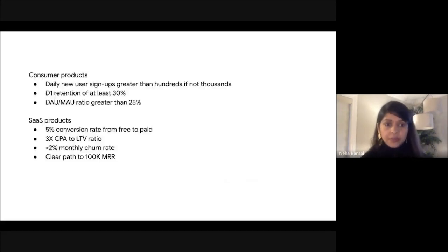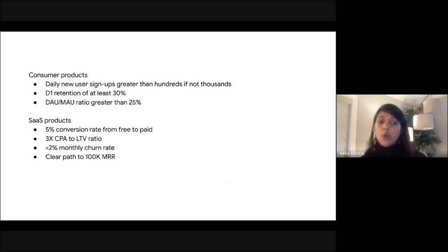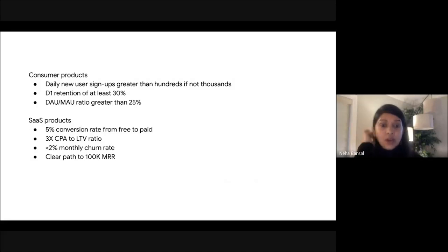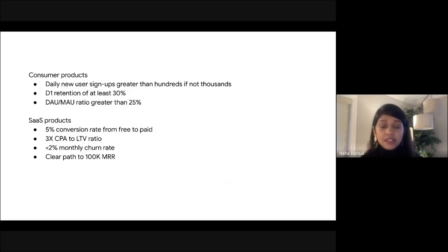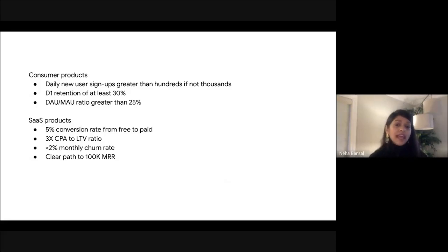For consumer products, you'd want to see a daily active user to monthly active user ratio of 25% and above — world-class would be over 50%. For organic acquisition, you'd want to see hundreds if not thousands of signups per day. Day one retention should be at least 30%, with 70% plus being top-notch. For SaaS products, you'd also look at monetization metrics: 5% conversion rate from free to paid, a 3x CPA to LTV ratio, monthly churn less than 2%, and a clear path to $100,000 in monthly recurring revenue.